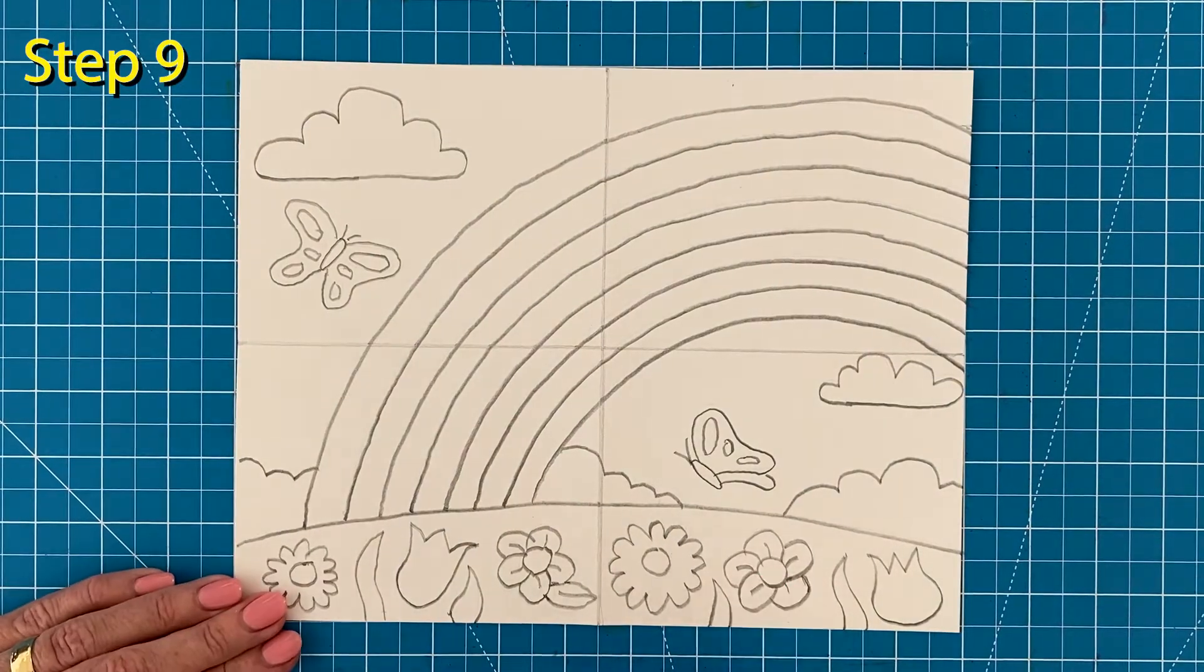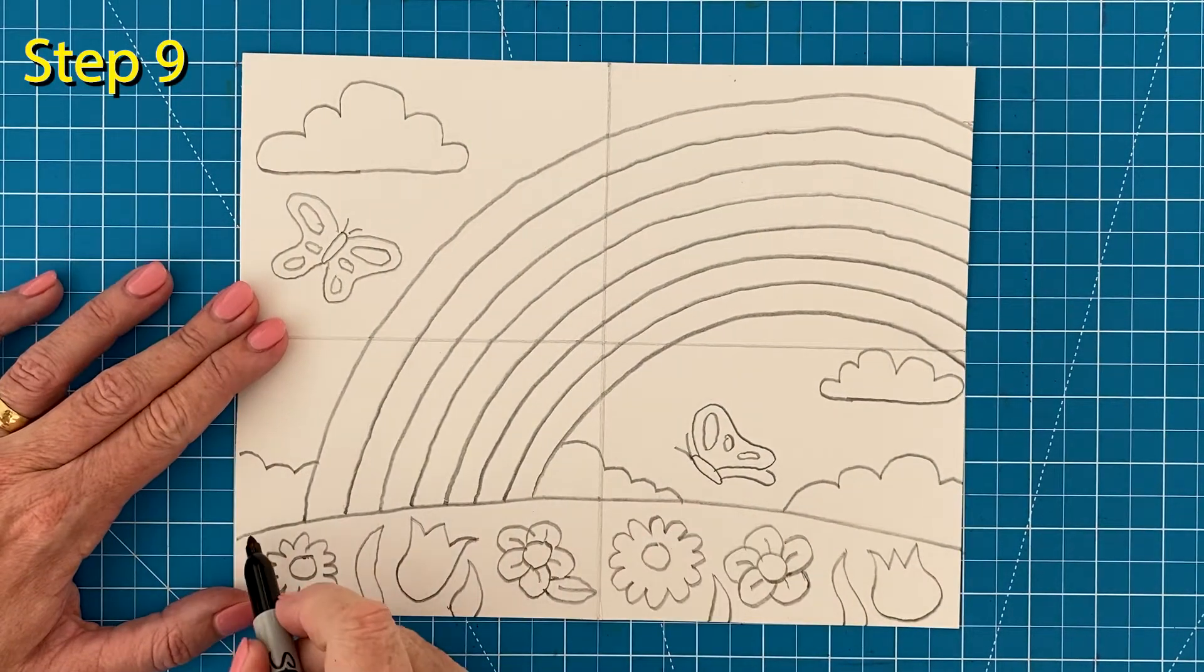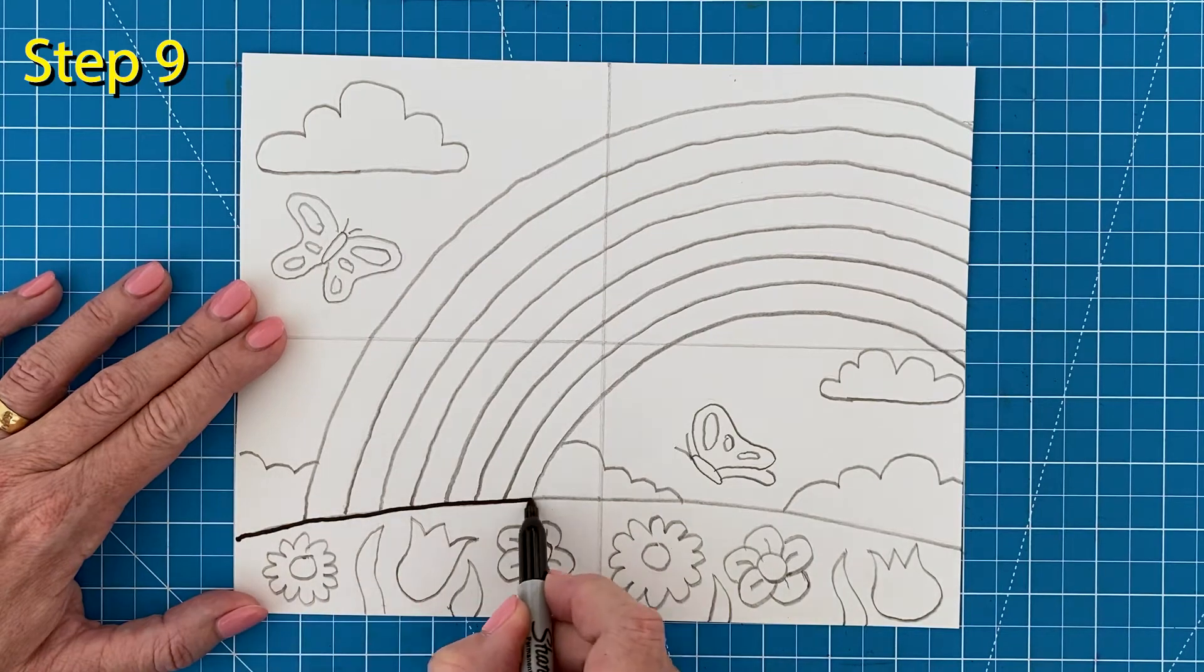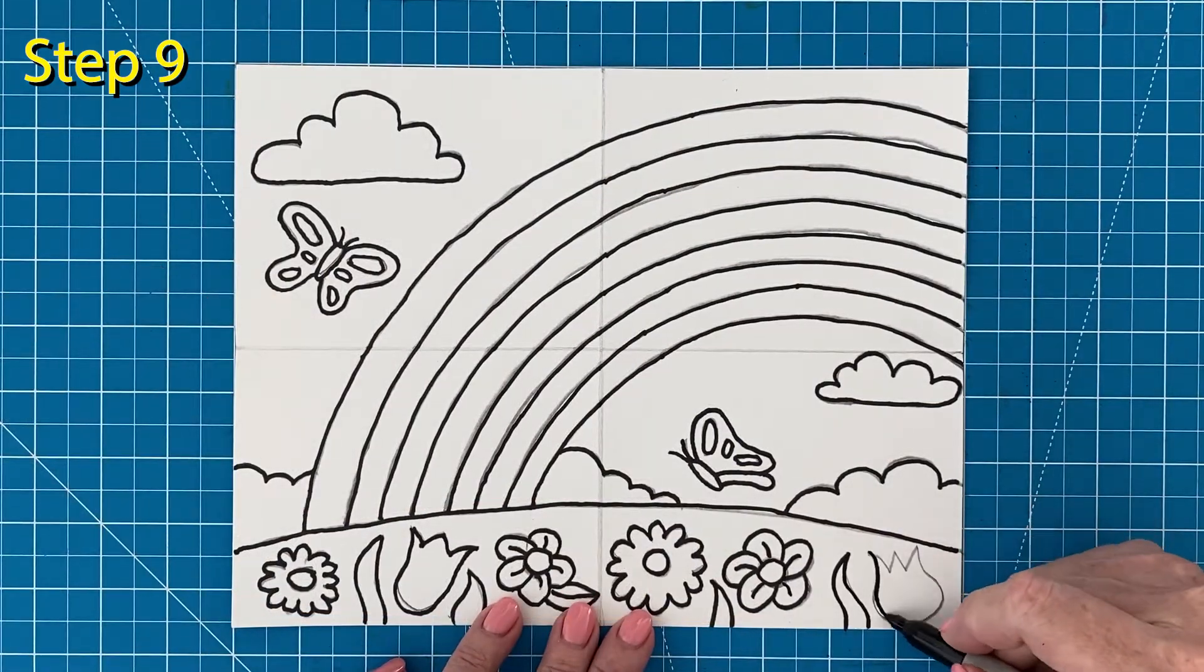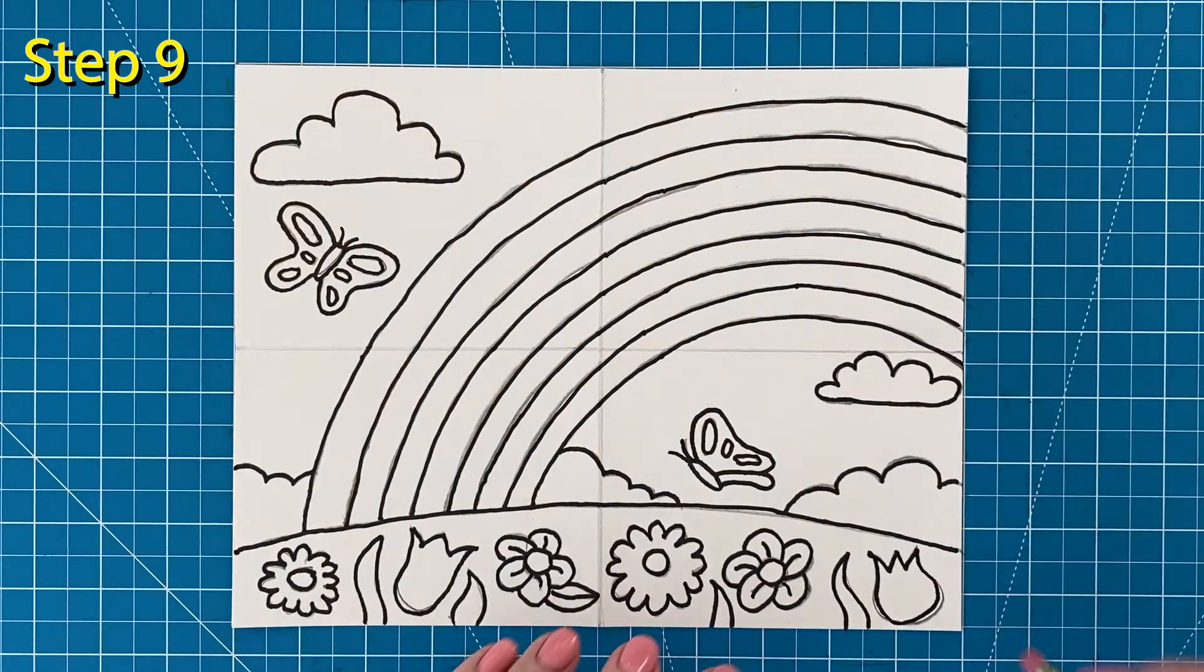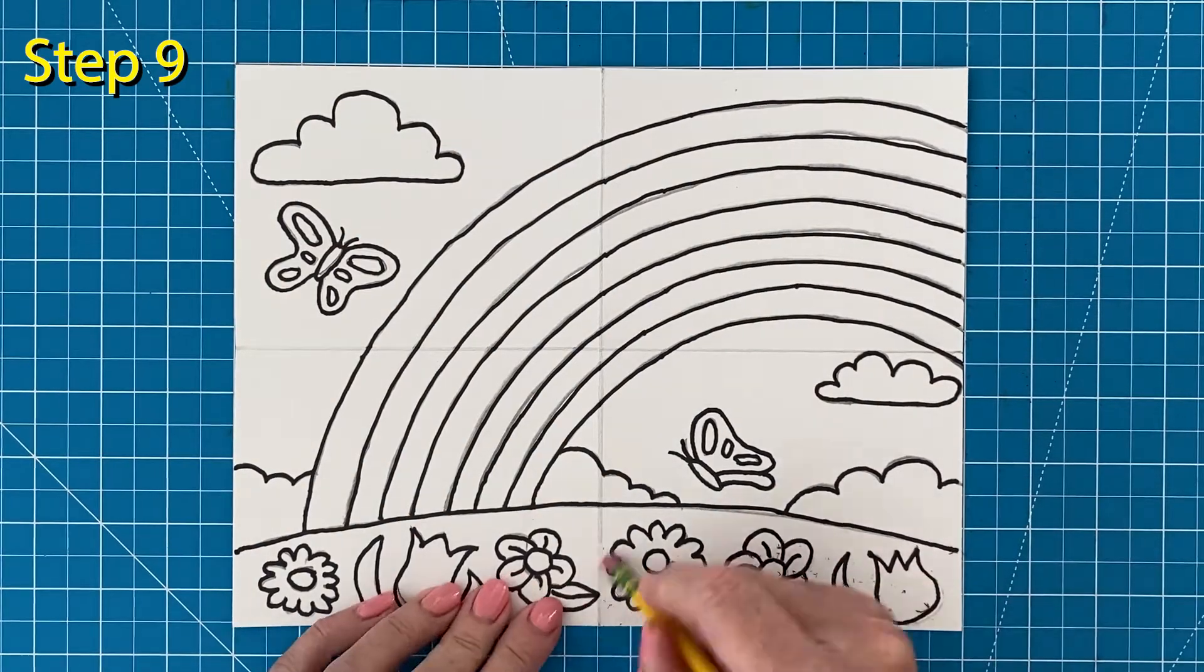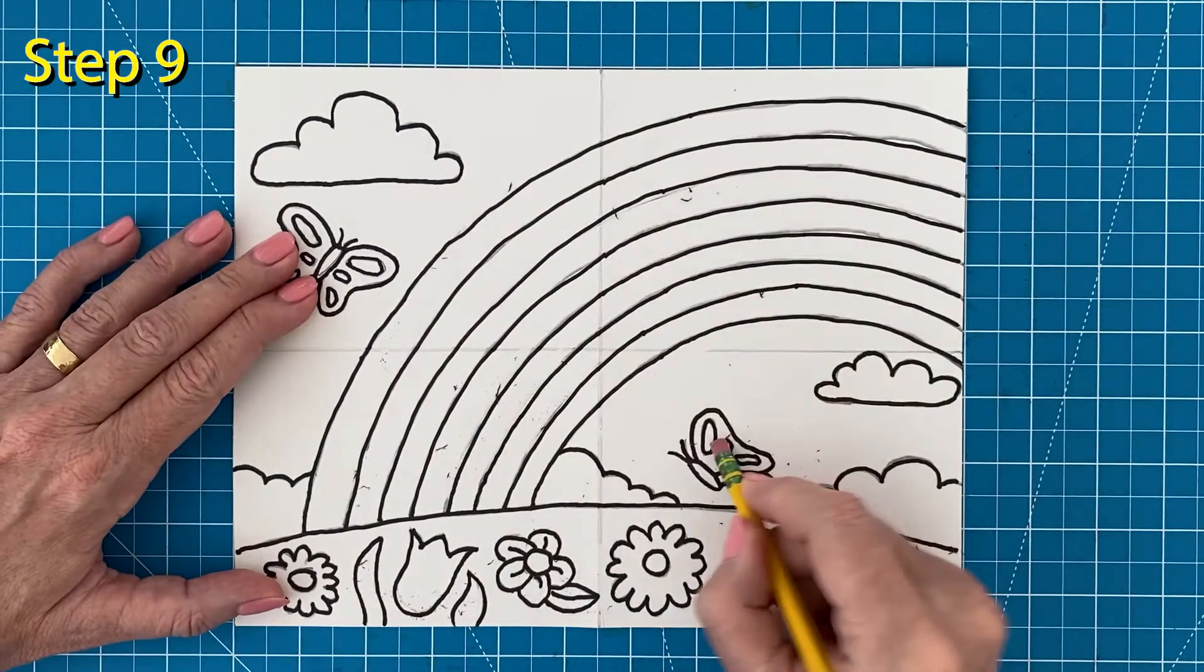Step number nine, it's time to start tracing your rainbow drawing. Remember, working slowly will always help you be more accurate. And when you're done tracing, it's a really good time to erase any extra pencil lines that you still see.